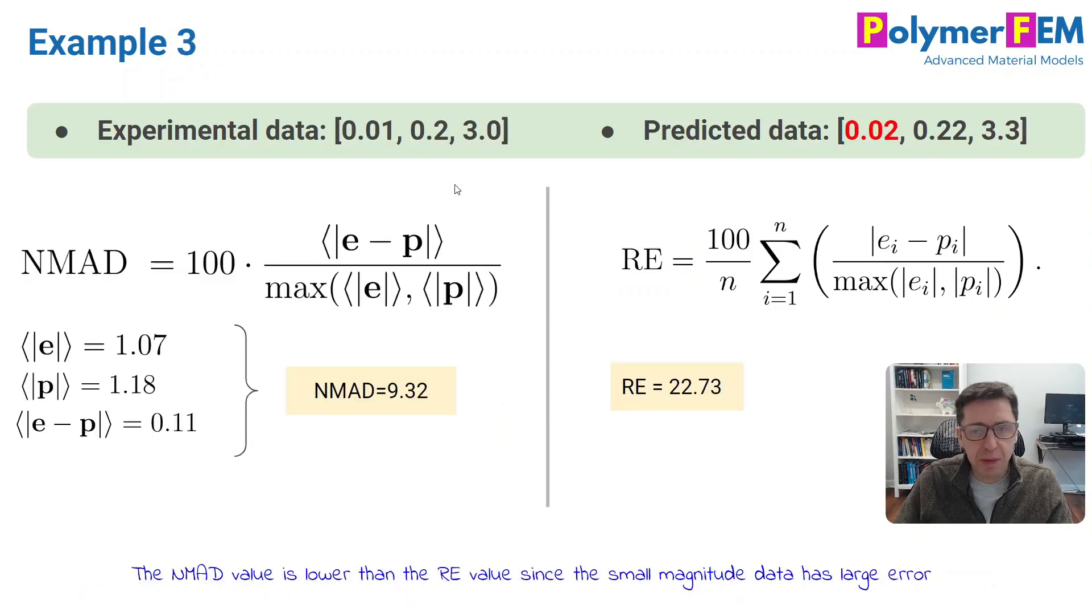In my last example, I have three data points but they're not equally spaced. They're almost logarithmically spaced: 0.01, 0.2, and 3. I have a very large error in the first data point, 100 percent, and the other two have a 10 percent error. In this case, the NMAD fitness will end up with a very small number, 9 percent error, simply because it focuses on the large magnitude values. You divide by the maximum. The relative error fitness number will be equally contributing from all three and will be 22 or 23 percent. That's a big difference when you have data that is more spread out like this.